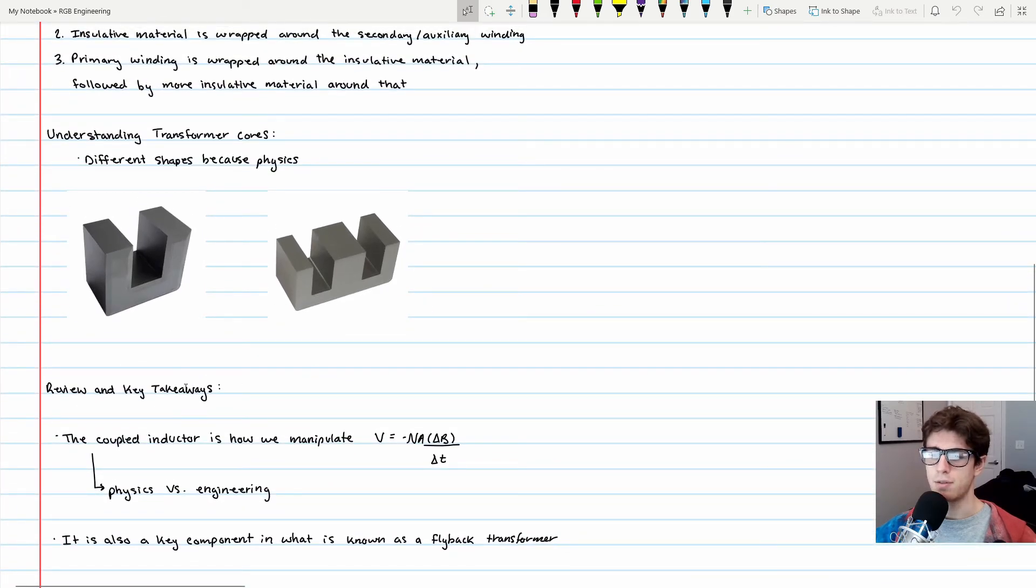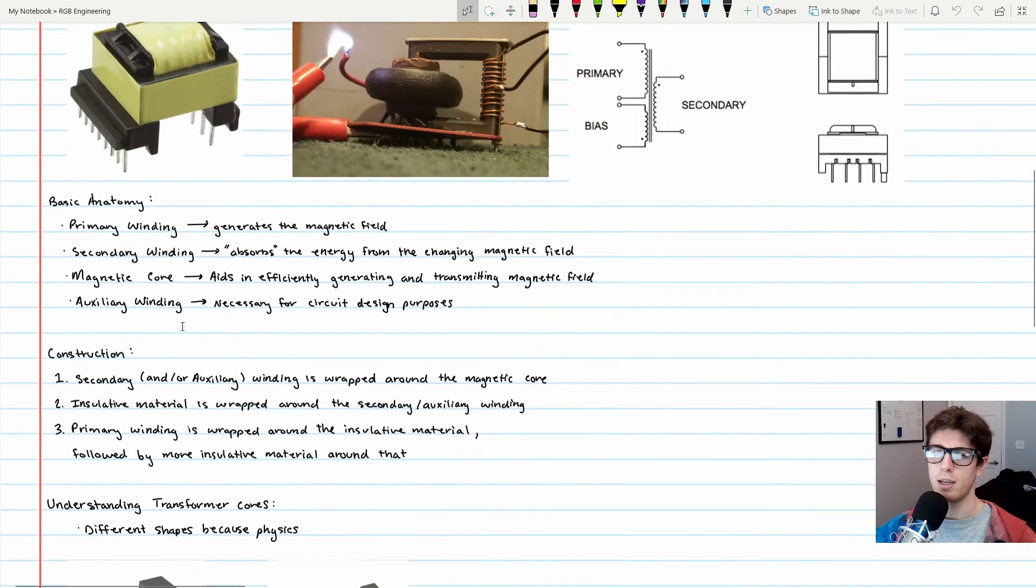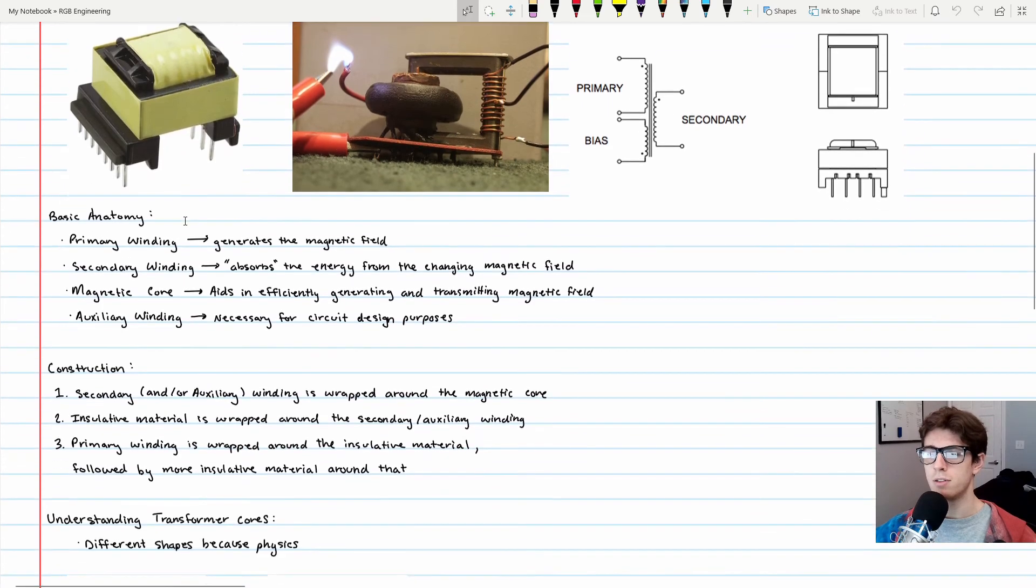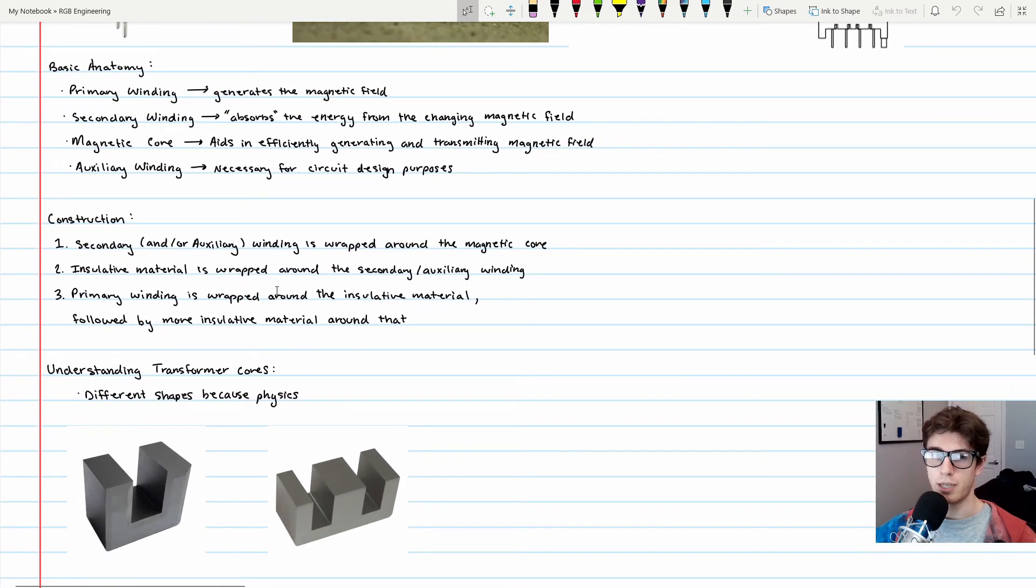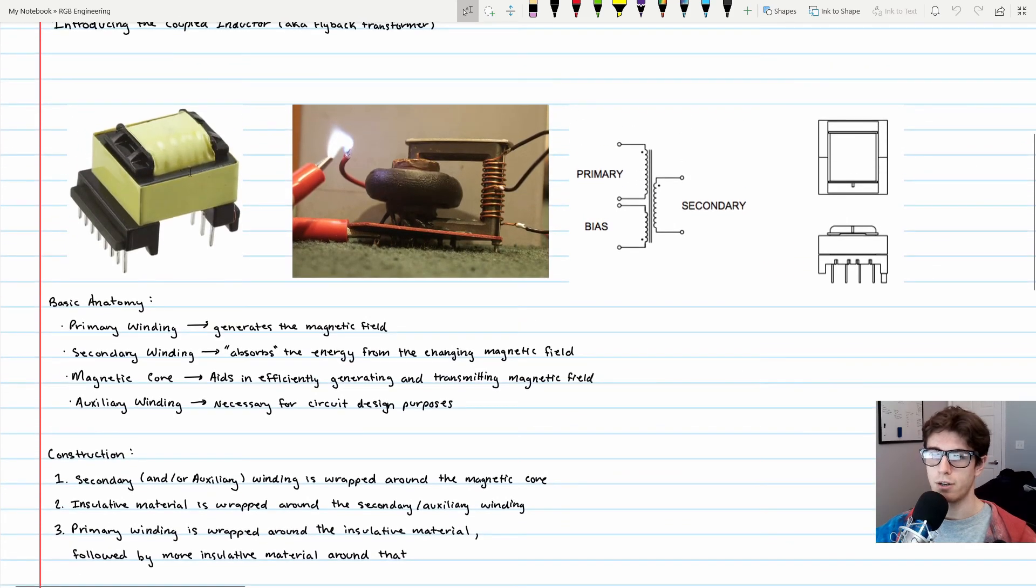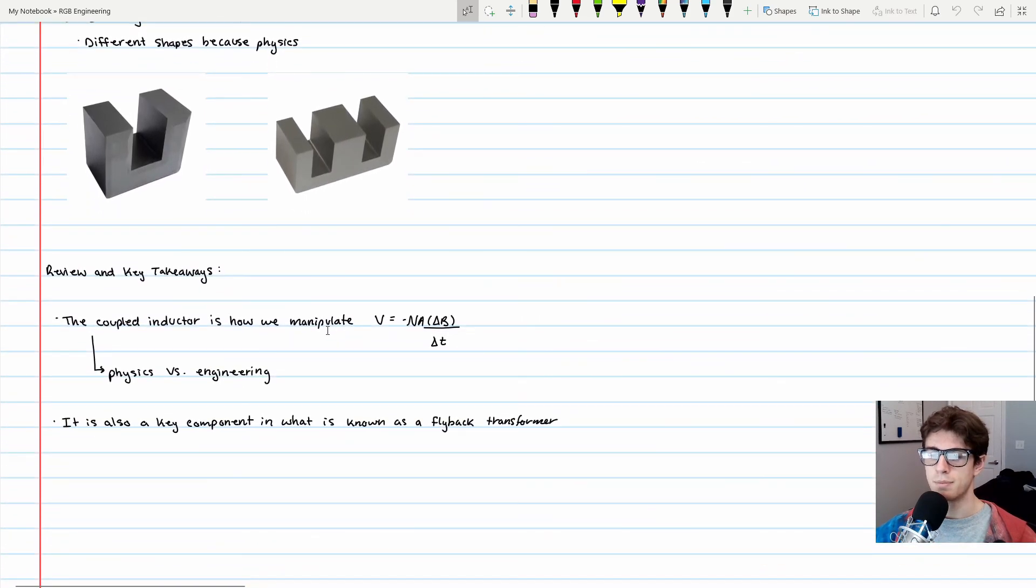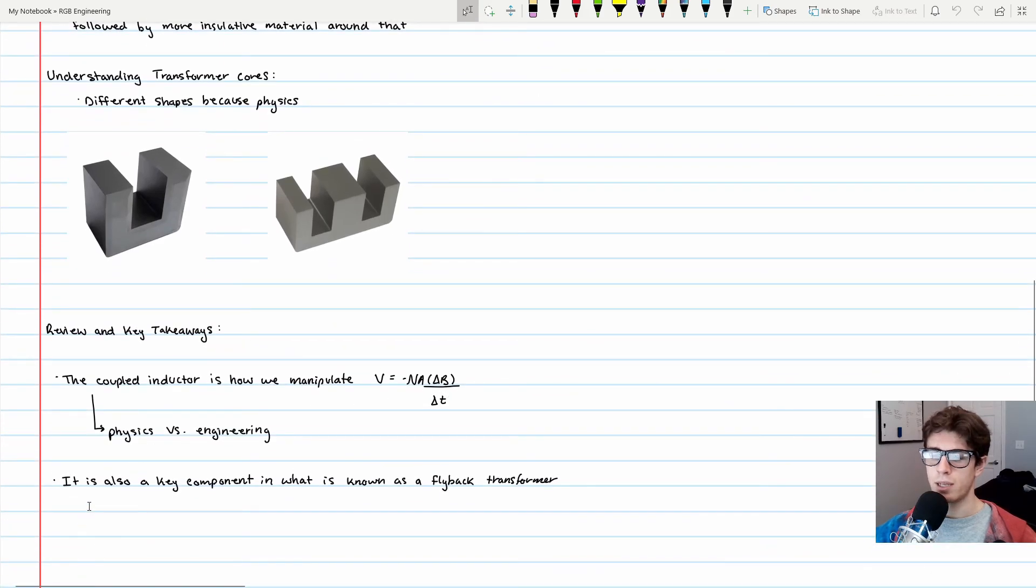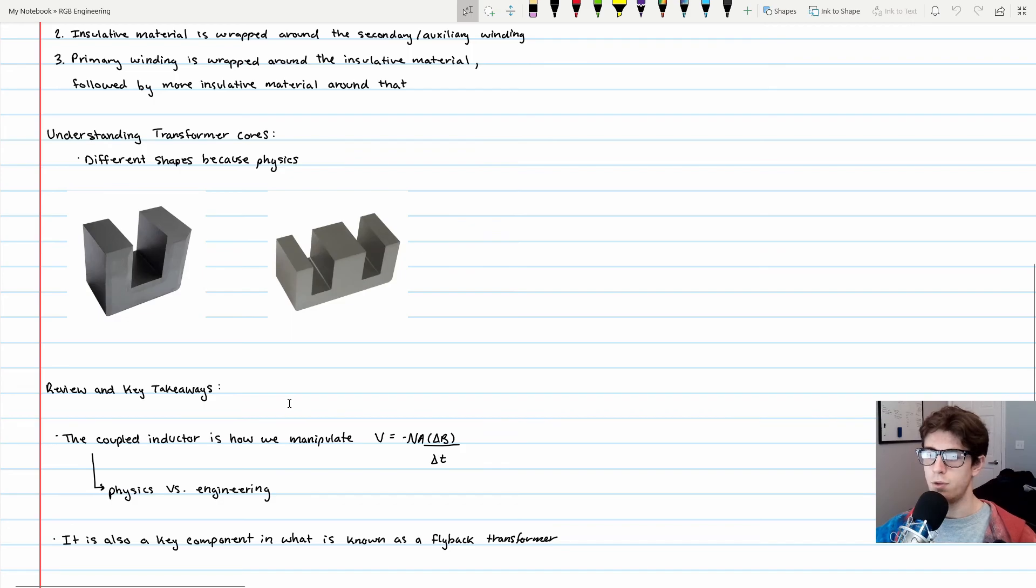The key takeaway: the coupled inductor is how we manipulate this physical equation. An engineer takes the physical phenomenon and asks how can we manipulate it. This is the physical embodiment of this equation. It's nice to have something tangible that you can physically hold in your hand.